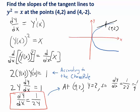That would be the slope of this tangent line. How about at this point, the other one we were asked about, at x equals 4, y equals negative 2? Well, at that point, 4, negative 2, your y value is negative 2.